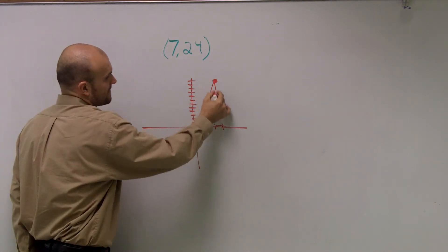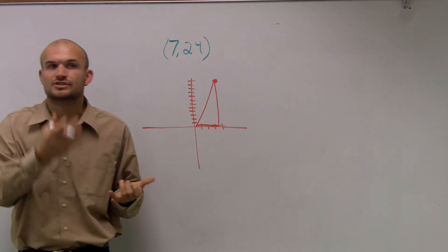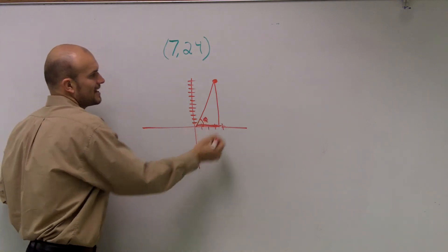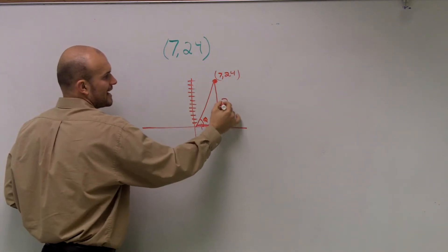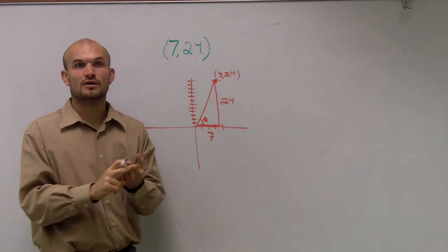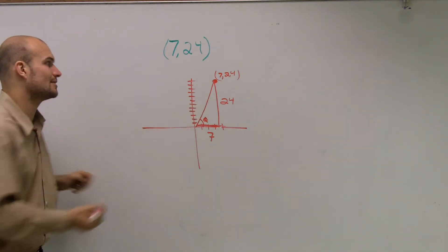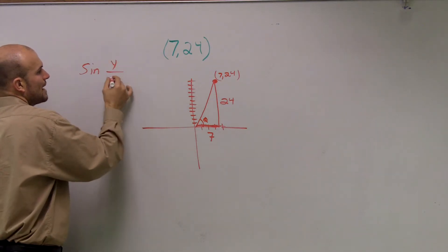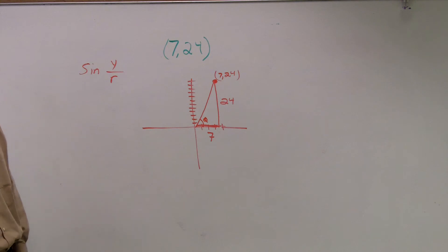To solve this problem, if I do not have a point on the unit circle, I'm going to use a right triangle to determine my trig functions. I'll call this theta. Here's my point 7 comma 24, so x is 7 and my height is 24. When we did the unit circle, sine was y and cosine was x because the radius was 1. But what we've recently learned is sine is opposite over hypotenuse, or y over r.